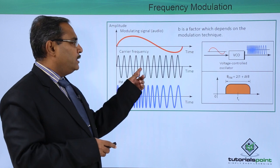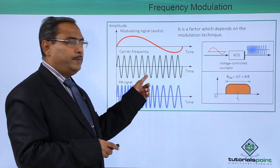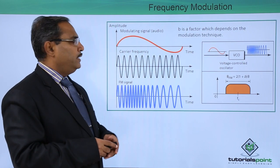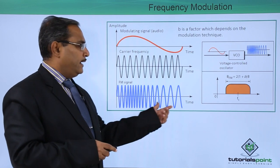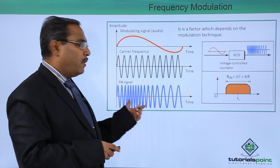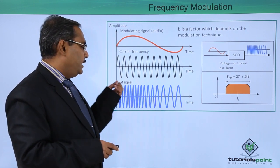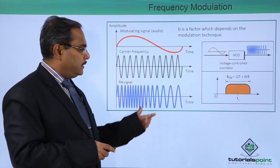When this frequency modulation will be done on this modulating signal using this carrier frequency, then it will be occurring like this. It is the modulated form of the signal. Here is the frequency modulated signal.